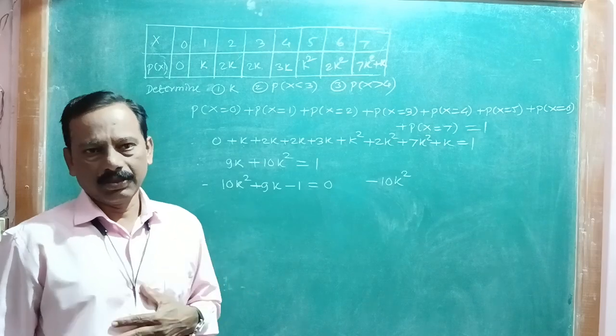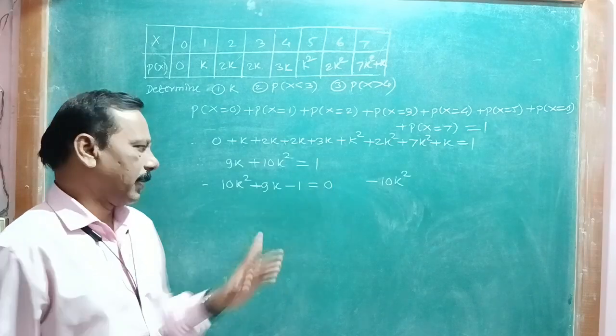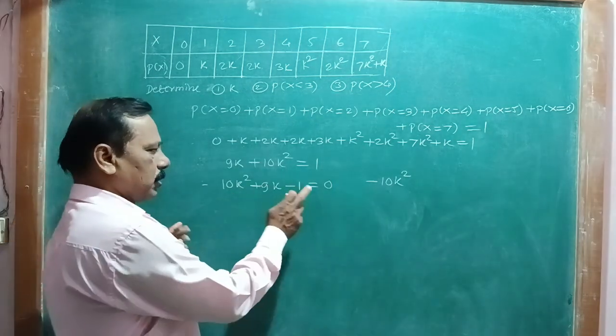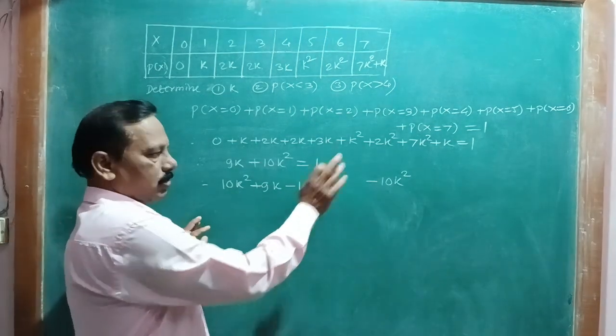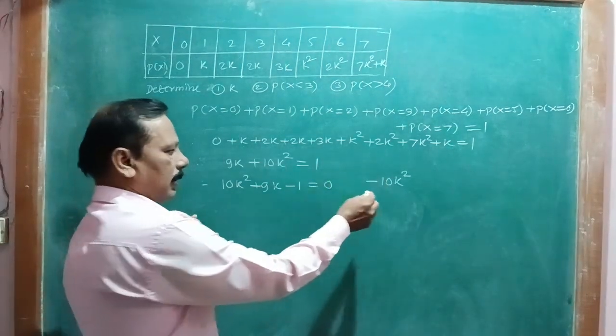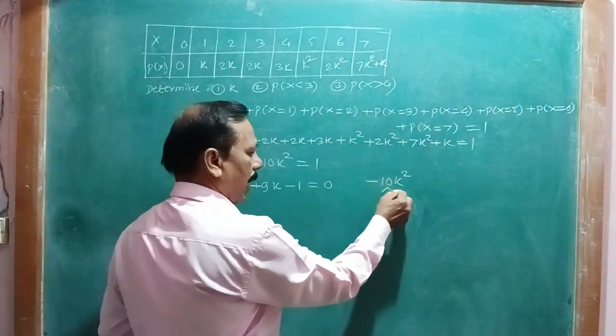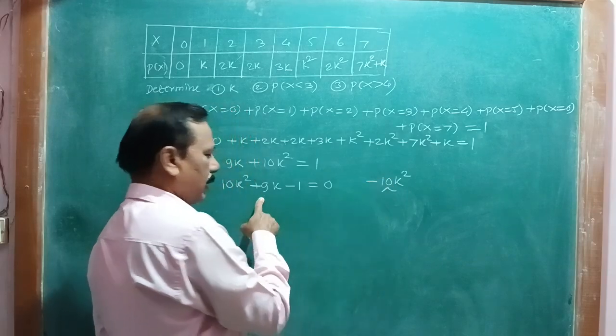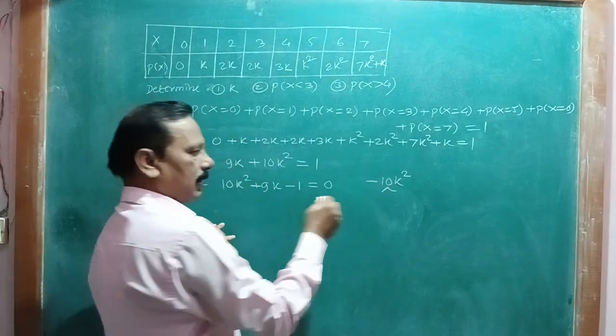Using the factorization method, we split the middle term 9k into two parts whose product equals -10k².